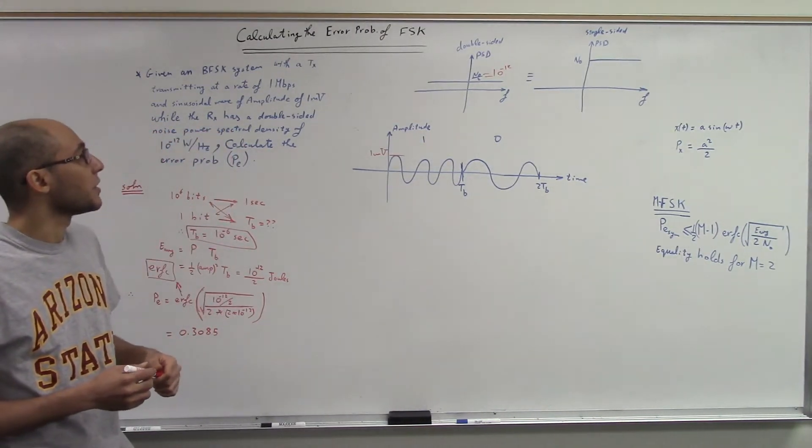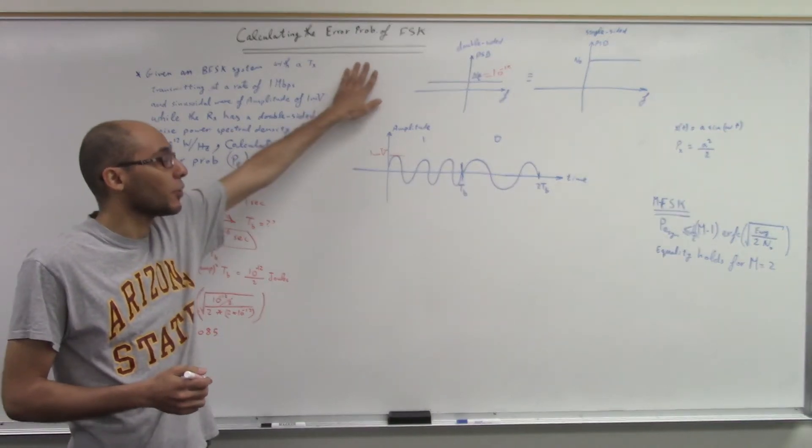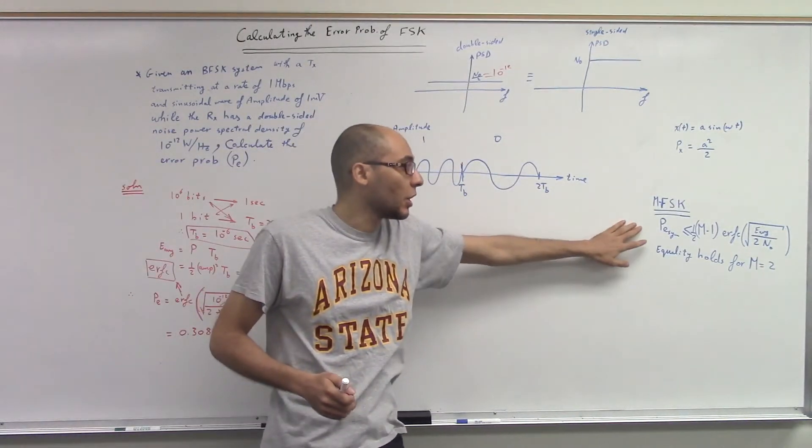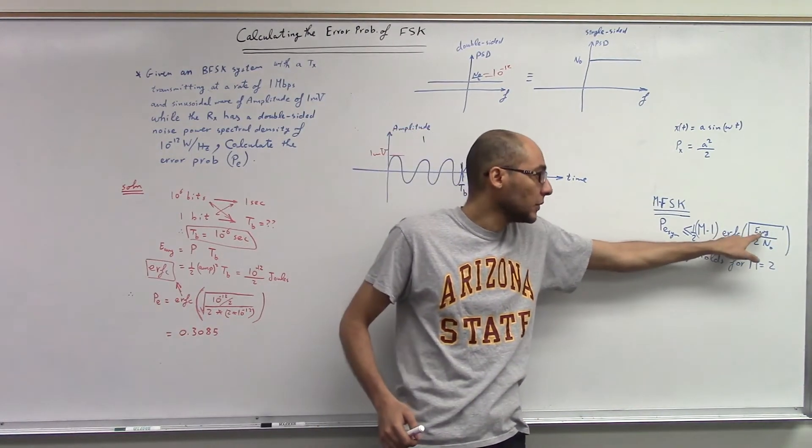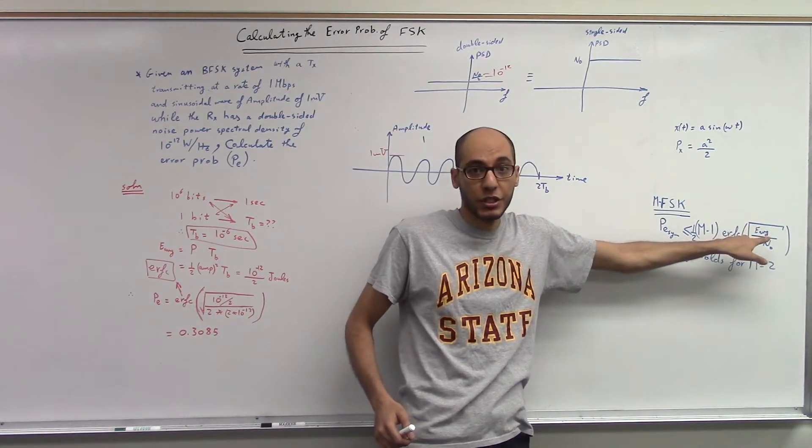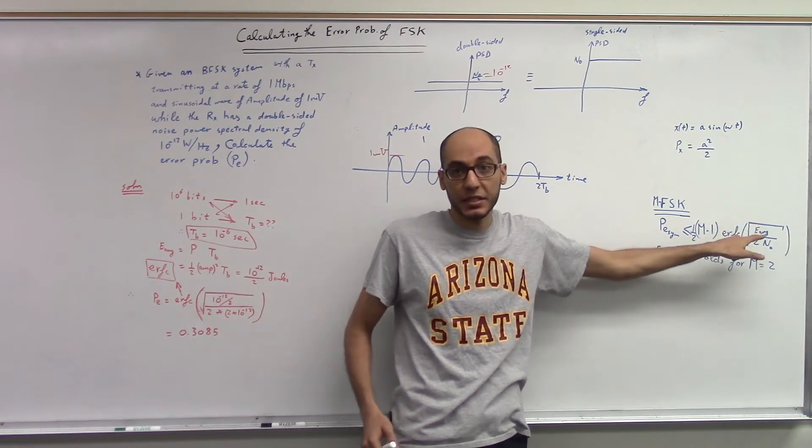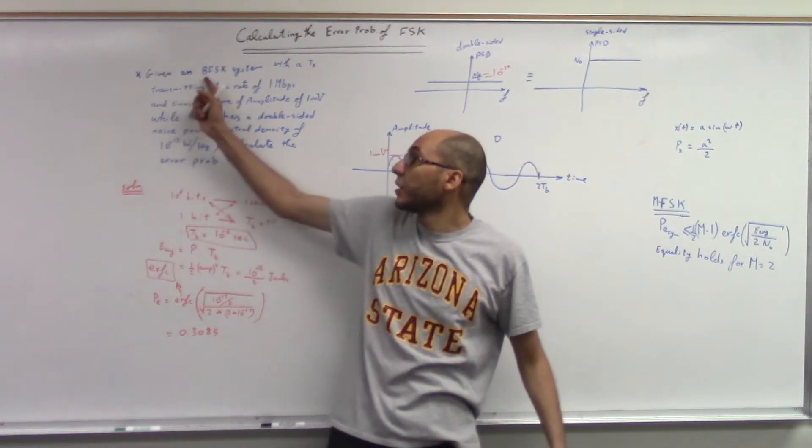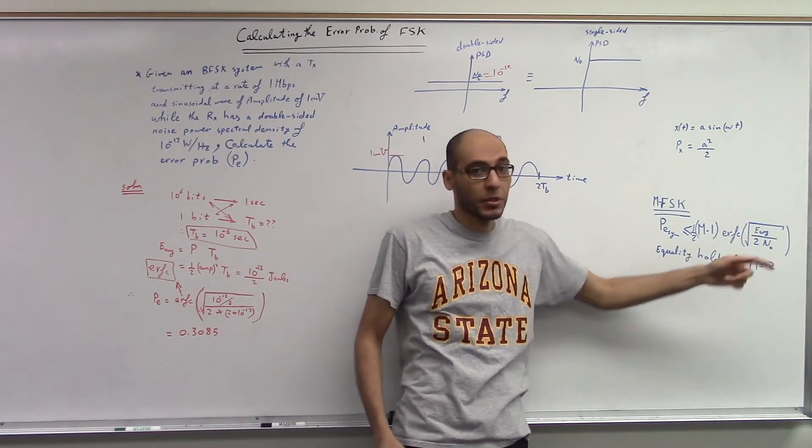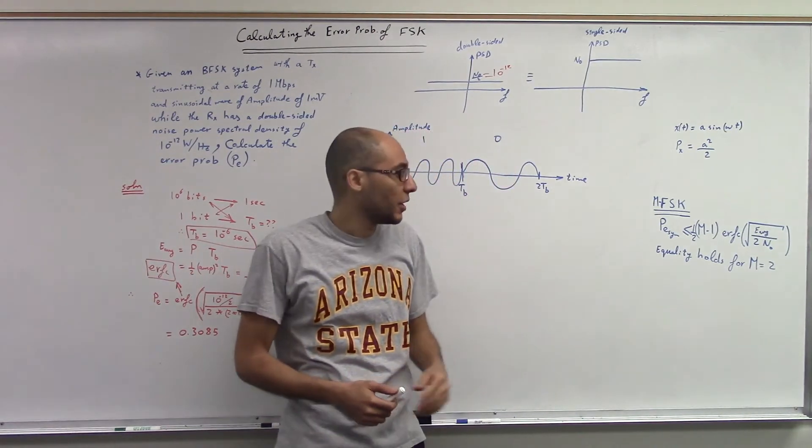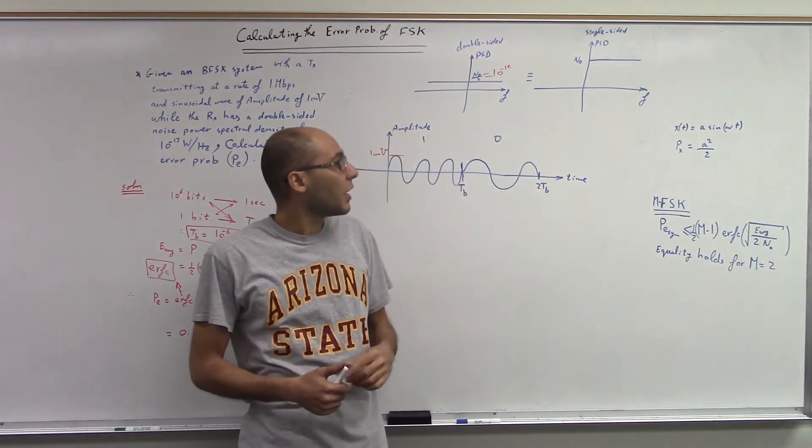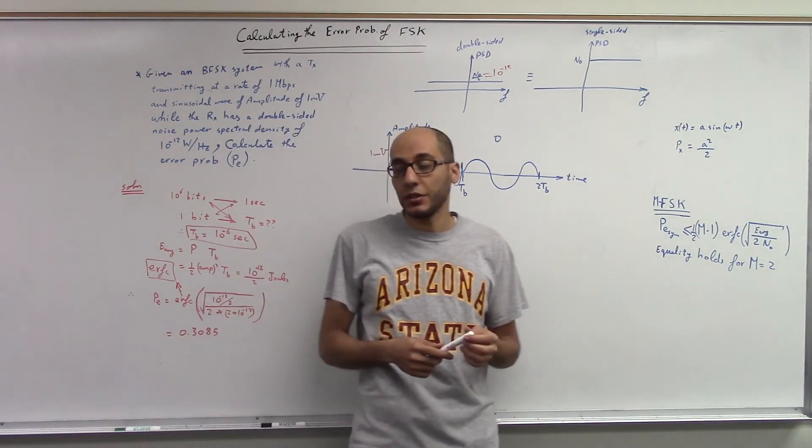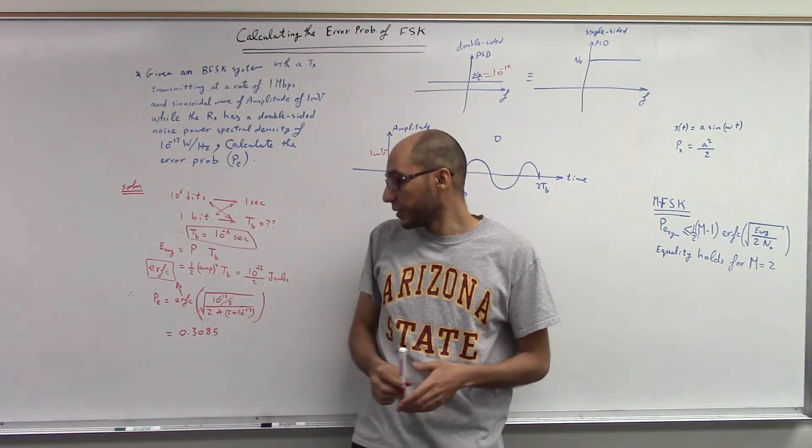So what we learned in this problem is that the calculation of error probability has to be through a known formula. You have to memorize this formula, and you have to calculate the average energy per symbol, which in our case, since it's a binary frequency shift keying, the average energy per symbol is the same as the average energy per bit. The noise is in watts per hertz, and you can apply it as we've done, and you end up having the probability of error.